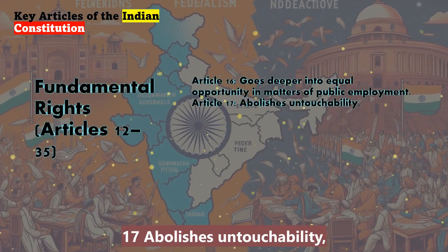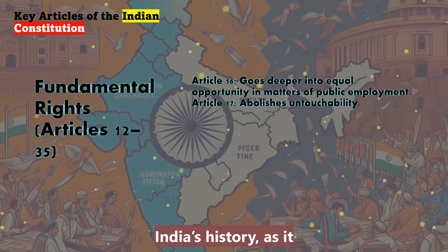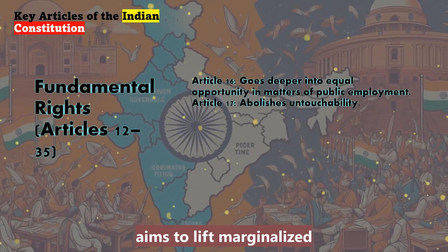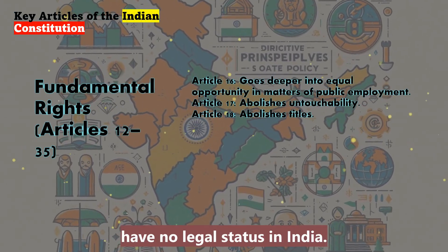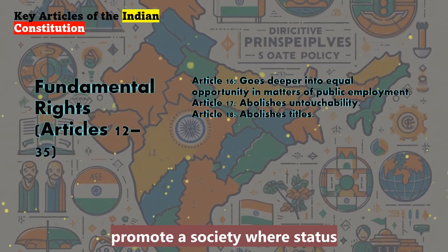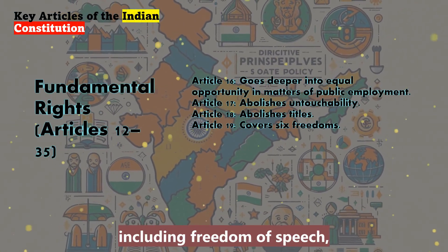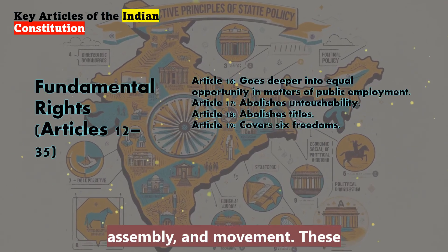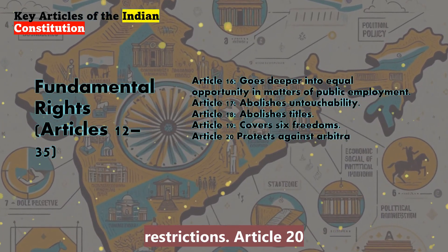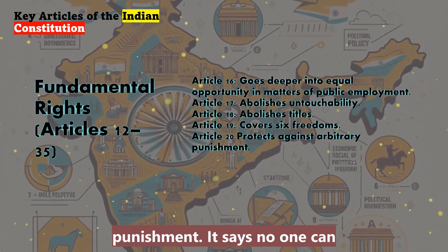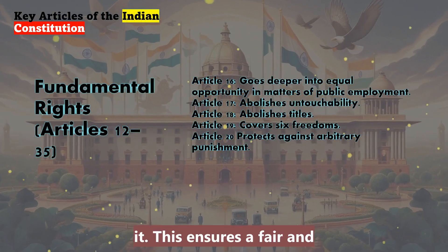Article 17 abolishes untouchability, making any practice of it illegal. This is a powerful statement, especially for India's history, as it criminalises the practice and aims to lift marginalised communities. Article 18 abolishes titles, meaning titles of nobility or privilege have no legal status in India — the aim being to promote a society where status is earned by merit, not birth. Article 19 covers six freedoms, including freedom of speech, assembly, and movement, allowing us to speak our minds, gather for a cause, and live without undue restrictions. Article 20 protects against arbitrary punishment — no one can be punished for a crime if it wasn't a crime when they committed it, ensuring a fair and just legal process.